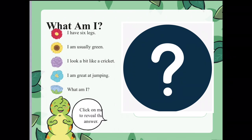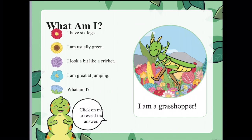I have six legs. I am usually green. I look a bit like a cricket. I am great at jumping. What am I? I am a grasshopper.